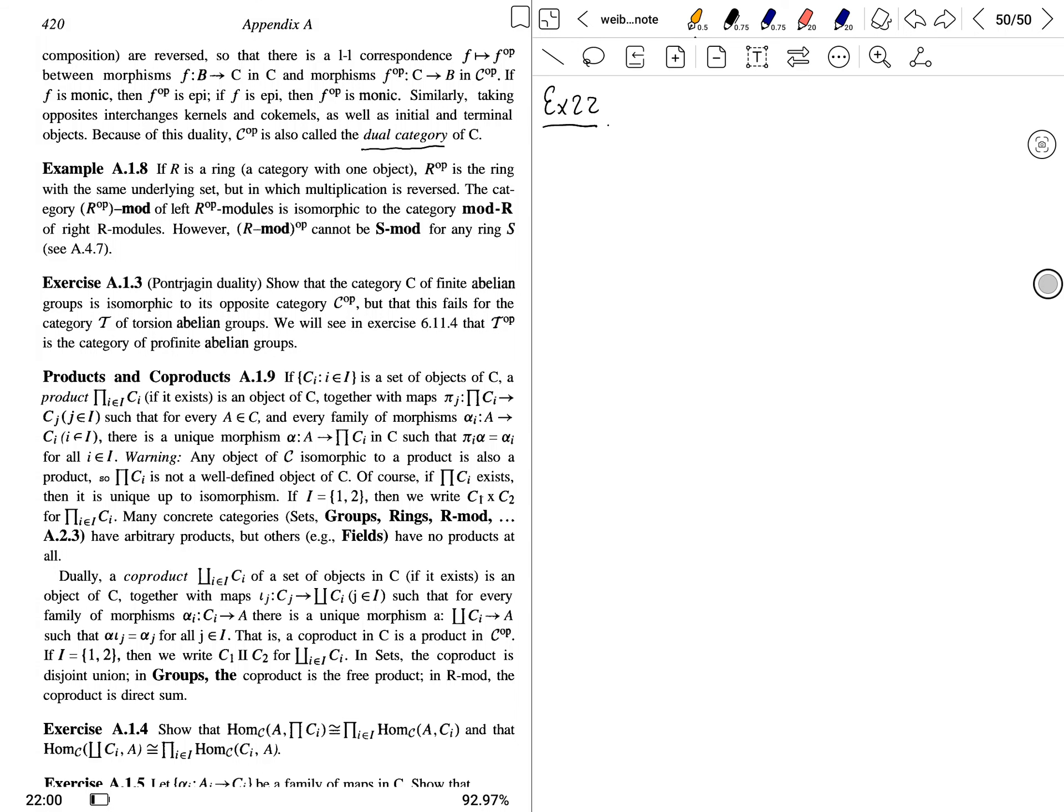Exercise 22 is 8.1.4. Show that we have homomorphism in the category C from A to product. This category is isomorphic to product.